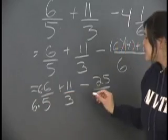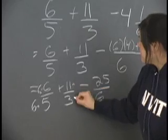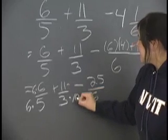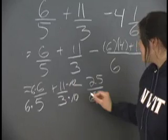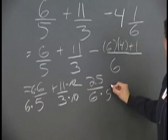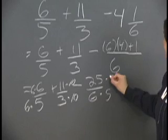And here what we do is we multiply 3 by 10 to get 30, so we do that to the top. And we multiply 6 by 5 to get 30, and we do that to the top also.